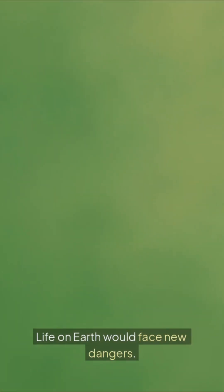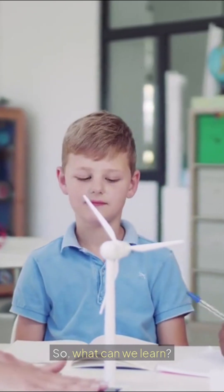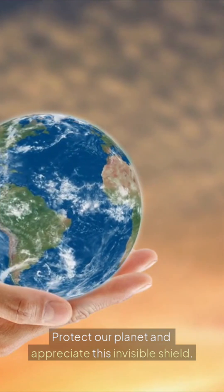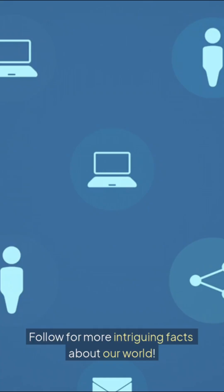In summary, if Earth's magnetic field vanished, technology would falter. Life on Earth would face new dangers. So, what can we learn? Protect our planet and appreciate this invisible shield. Follow for more intriguing facts about our world.